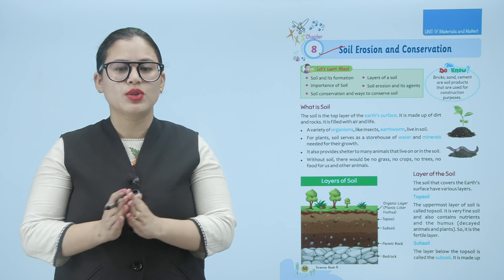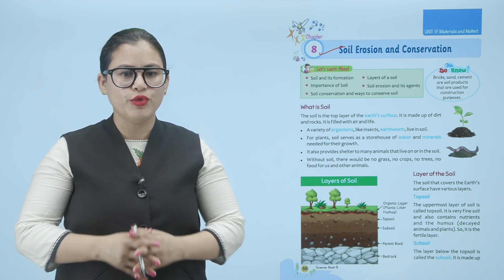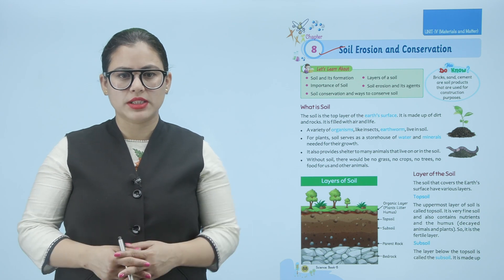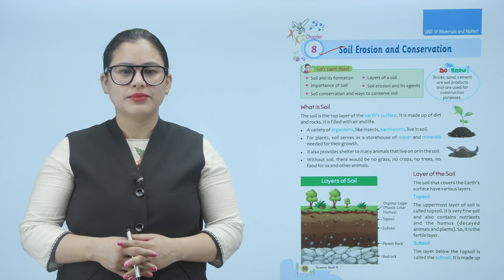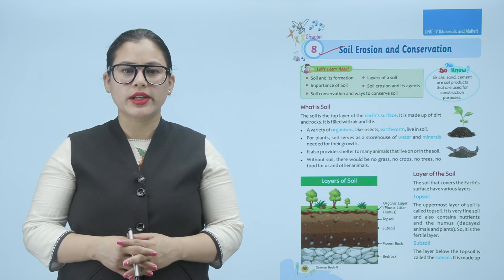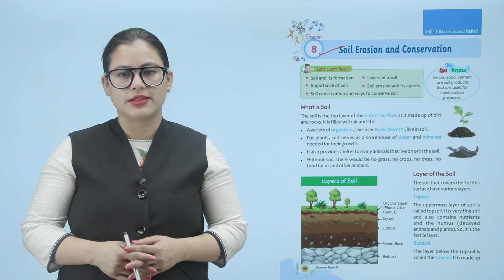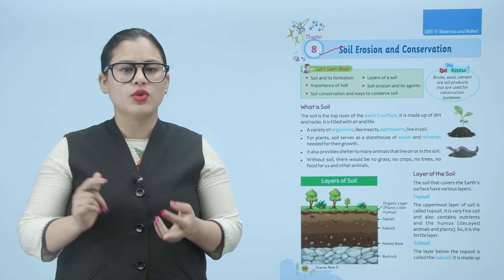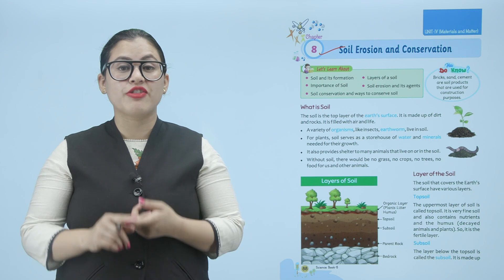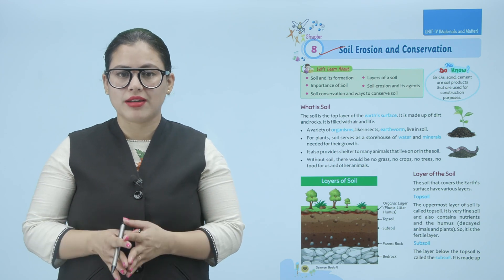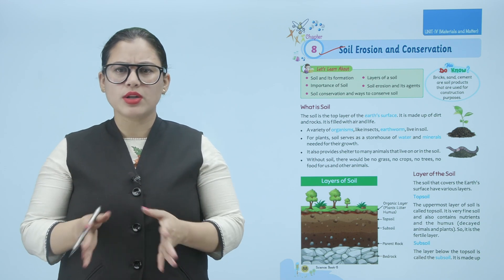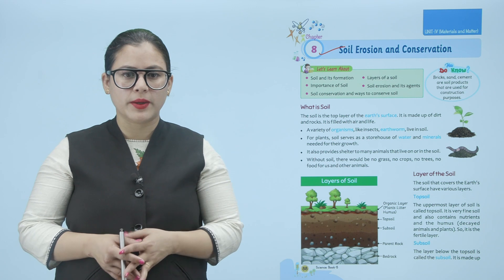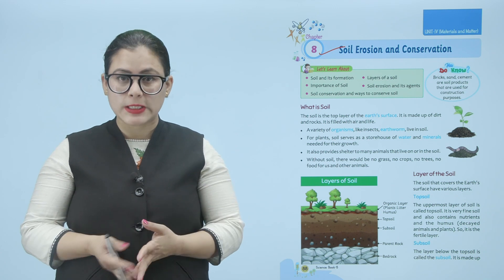Without soil there would be no grass, no crops, no trees, no food for us and other animals. Soil kya hai? Aap ka top layer hai earth ki surface ka. Dirt se bana hai, rock se bana hai, aur is ke andar life hai, air hai. Bohot saari organisms aapke soil mein rehti hain jaise ki earthworm hai aur bohot saare insect rehte hain.